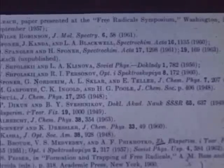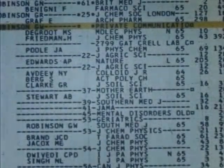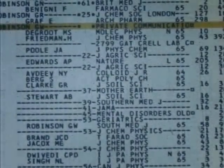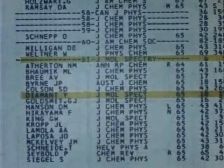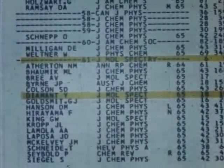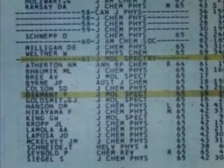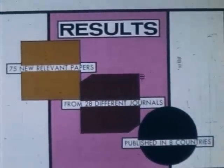For example, look up this paper and enter the citation index under Robinson GW. You will find it is cited by Diamant and a dozen other authors. By continuing this procedure, we can locate about 75 relevant papers from 28 journals.